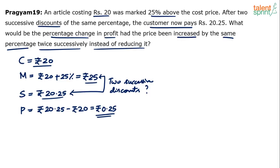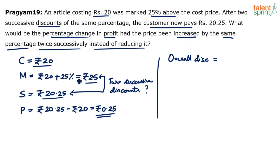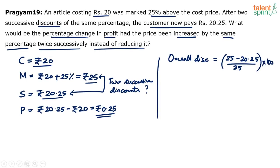Now, how do you find the two successive discounts? Go for the effective percentage concept. The overall discount from Rs.25 to Rs.20.25: overall discount is (25 minus 20.25) divided by 25, into 100. That is 4.75 divided by 25, times 4, giving an overall discount of 19%.